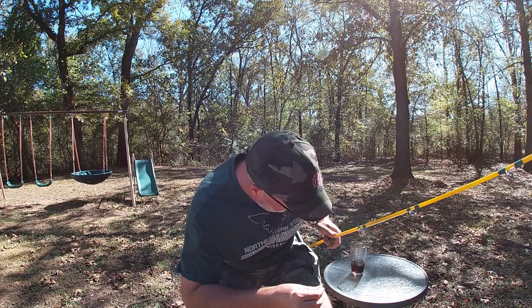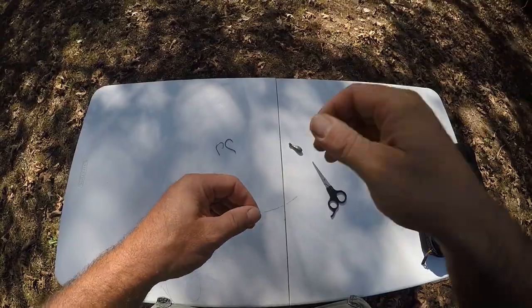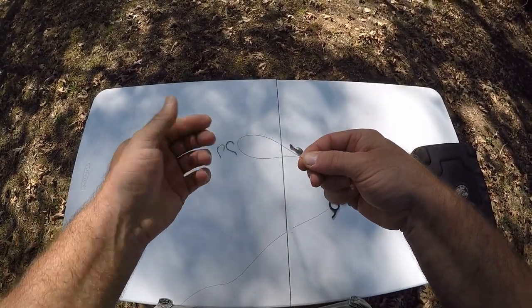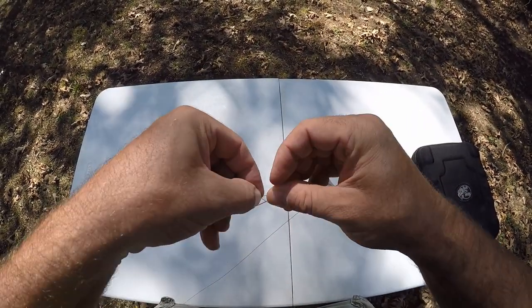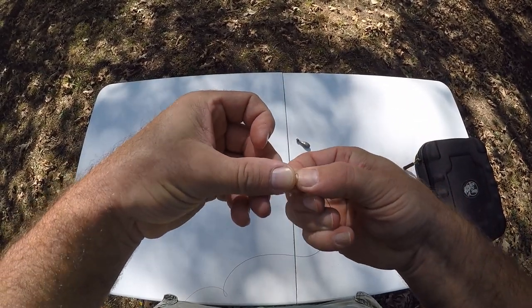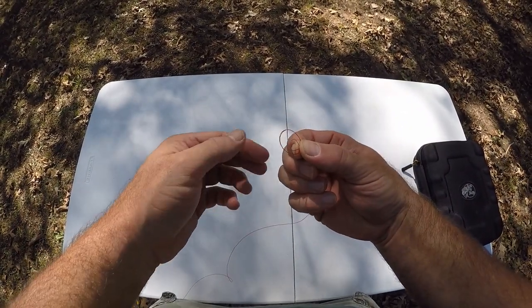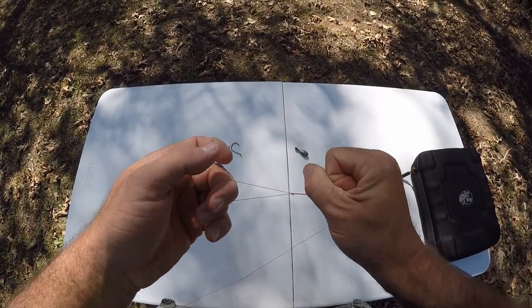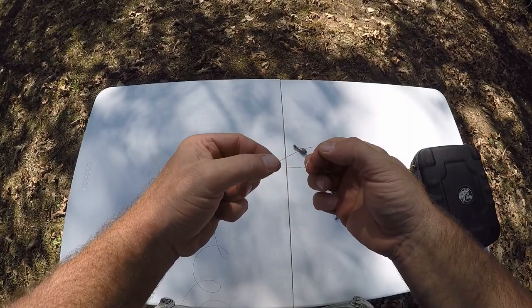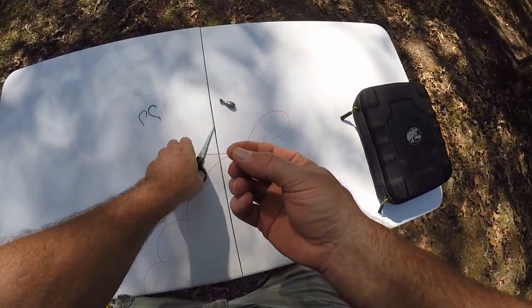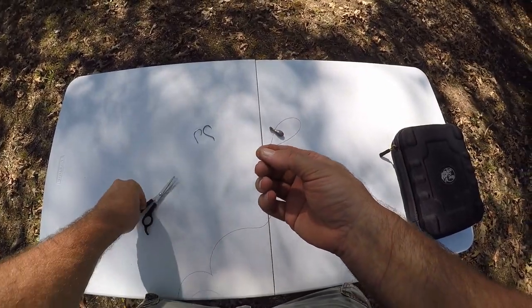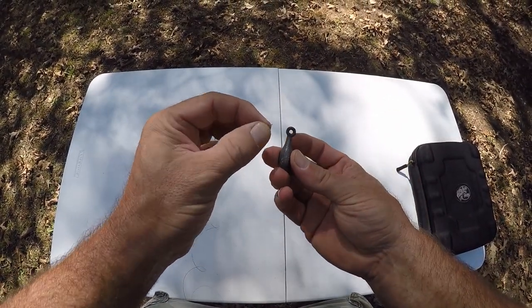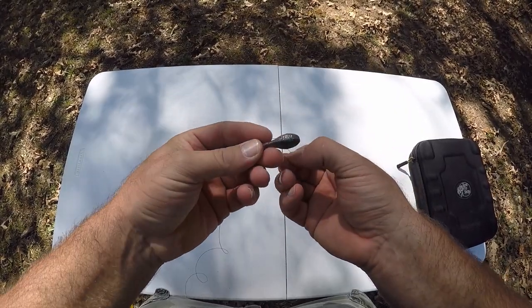All right y'all, we're going to tie up this double hook rig here. First we'll get our weight tied on. Double my line up like so and just do a little overhand knot just like this. Now this loop doesn't have to be any certain size, just big enough for your weight to fit through it. Let's go ahead and cut this tag here off a little bit. Get our one ounce weight, just pinch your line together and put it right through the eye there, and then your weight goes through the loop.